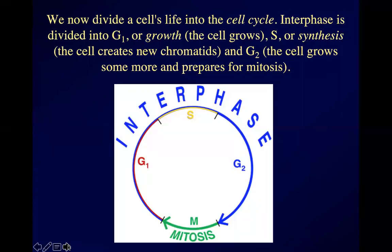We now divide the life cycle of a cell into what we call the cell cycle. Mitosis is, of course, when the nucleus divides. Typically, most of a cell's life is spent in interphase.